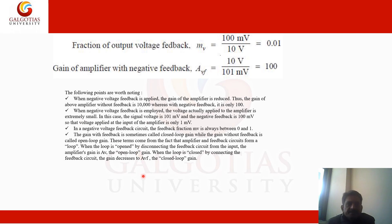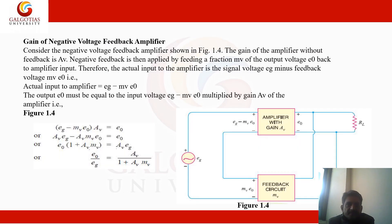In a negative voltage feedback circuit, the feedback fraction mv is always between 0 and 1. The gain with feedback is sometimes called closed-loop gain, while the gain without feedback is called open-loop gain. These terms come from the fact that the amplifier and feedback circuits form a loop. When the loop is opened by disconnecting the feedback circuit from the input, the amplifier gain is Av — the open-loop gain. When the loop is closed, the gain decreases to Avf, the closed-loop gain.